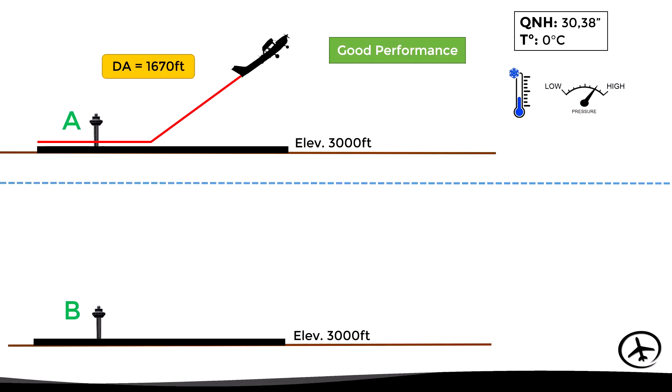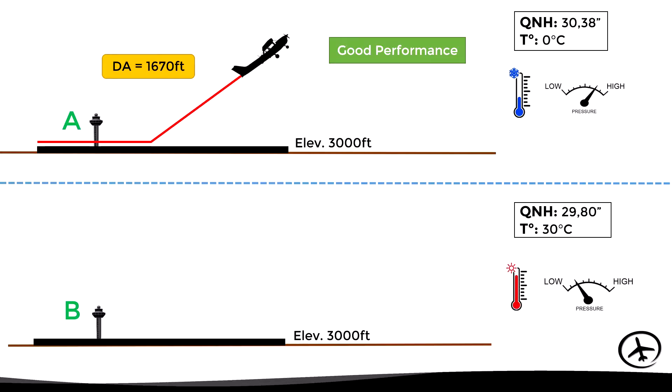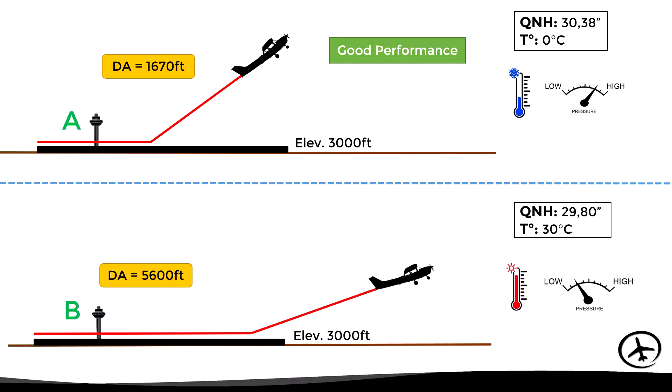On the other hand, airport B also has an elevation of 3,000 feet but reports a QNH of 29.80 inches of mercury and a temperature of 30 degrees Celsius. This represents relatively low pressure and high temperature, resulting in low air density. Since density is low, the density altitude is high — in this case 5,600 feet. Aircraft operating here will behave as if flying at 5,600 feet, presenting poor performance due to reduced air density.